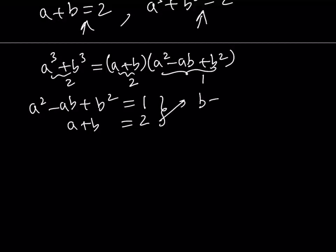So, from here you can isolate B. B can be written as 2 minus A. If I plug it into the second equation, I get A squared minus A times B, which is 2 minus A, plus B squared, which is 2 minus A quantity squared, and the whole thing is equal to 1.